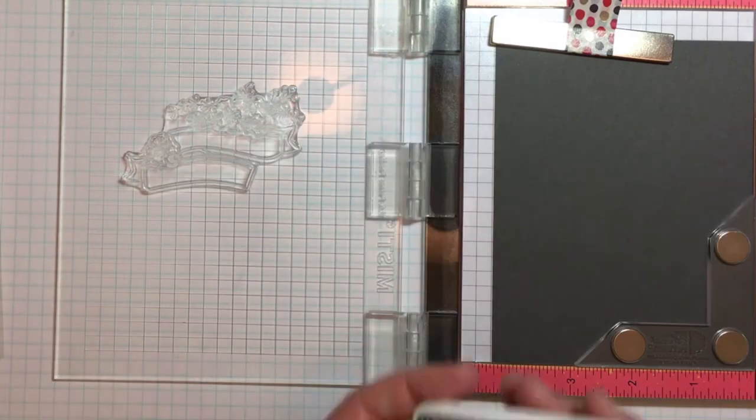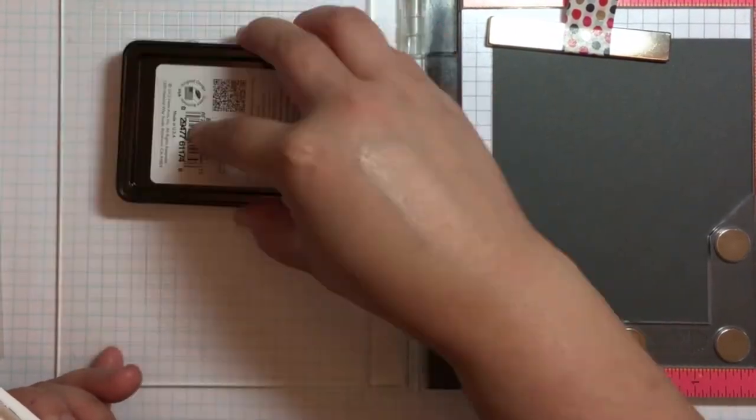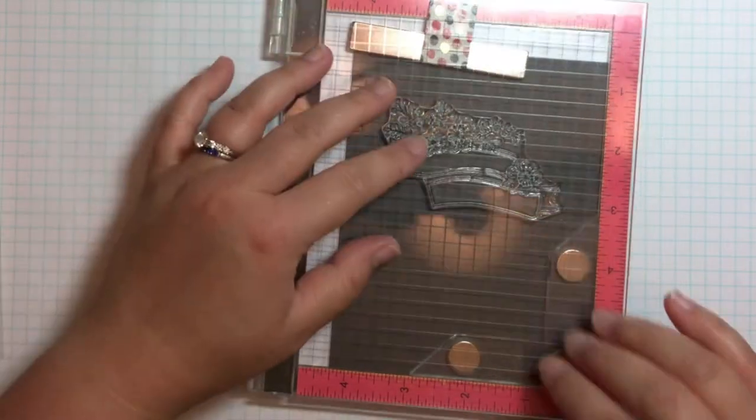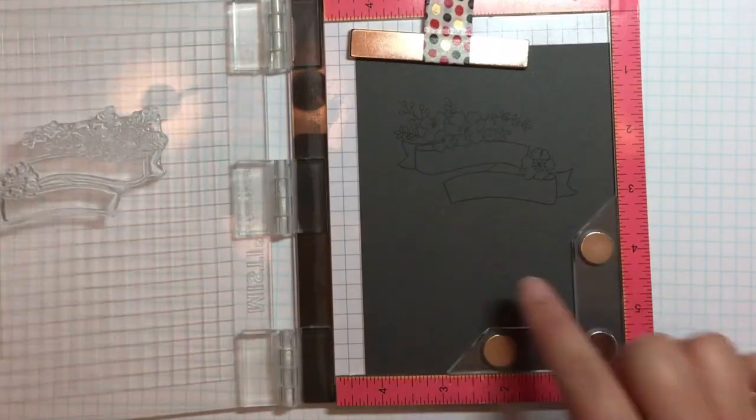I stamped the floral banner from Blossoms and Banners with soft granite ink onto dark gray cardstock. I used my MISTI to stamp the image and I left the stamp on the MISTI lid.